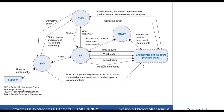The Project Planning process area includes developing the project plan, involving relevant stakeholders, obtaining commitment to the plan, and maintaining the plan. Planning begins with requirements that define both the product and the project. The project plan covers the various project management and development activities performed by the project.